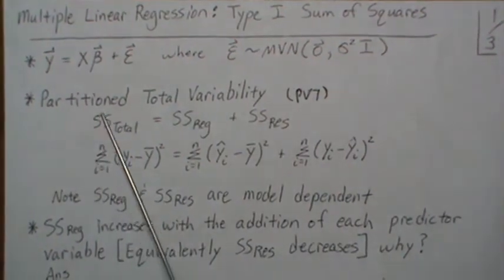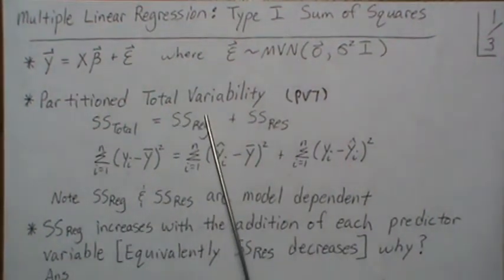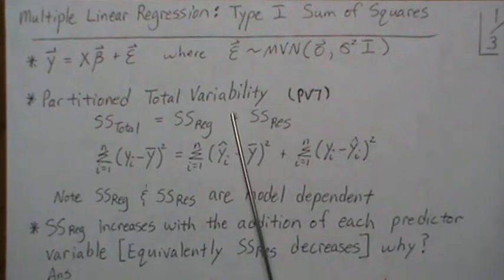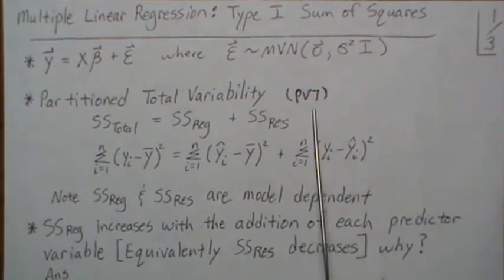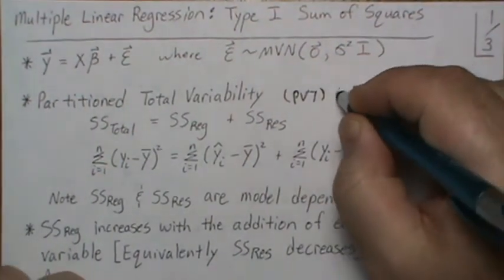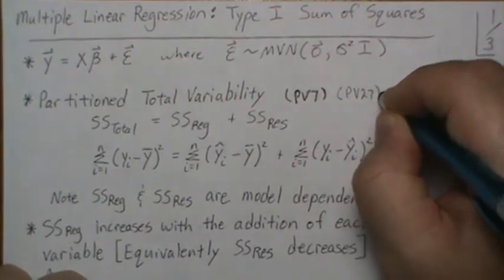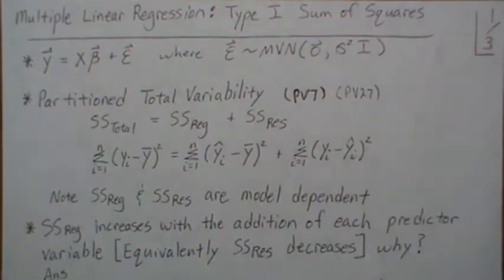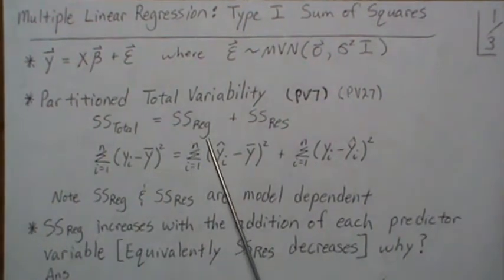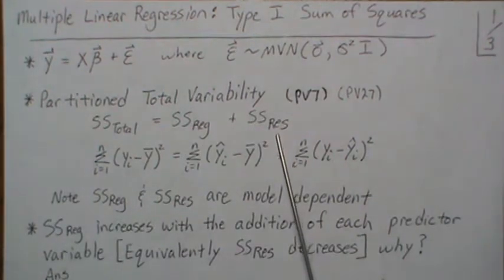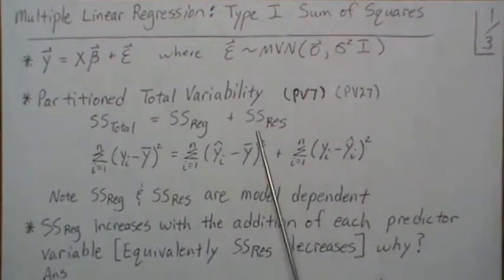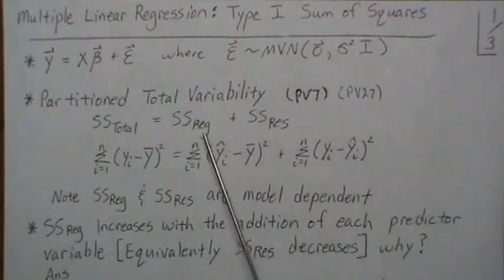In the previous video — video 27 — we looked at partitioning the total variability, and also in previous video 7 we talked about partitioning the total variability and why it's important. As a reminder, the total sum of squares equals the sum of squares regression plus sum of squares residual. When SSR is big and SSE is small, the model is useful. When SSR is small and the residual error is big, the model is not useful.